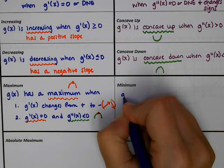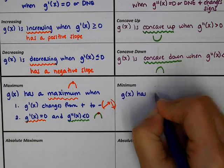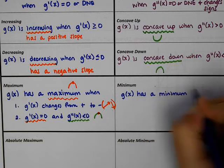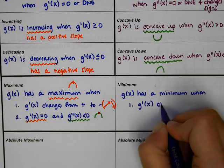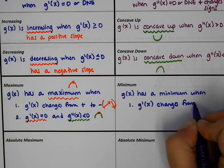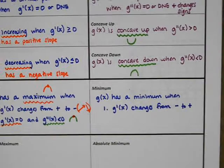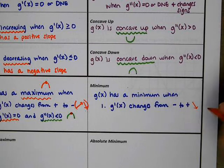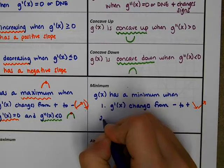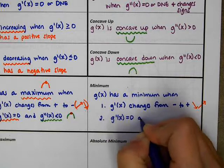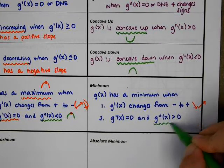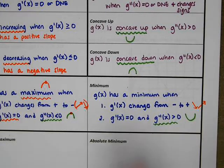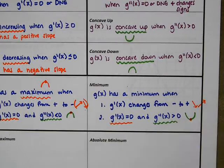g of x has a minimum when either option one: g prime changes from negative to positive — meaning the graph goes downhill then uphill — or option two: the derivative equals 0 and the second derivative is greater than 0. If the second derivative is greater than 0, we're concave up, and with the derivative equal to 0 we have a horizontal tangent line, so we're right at the bottom.